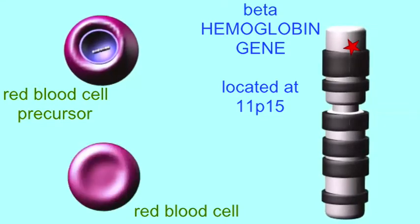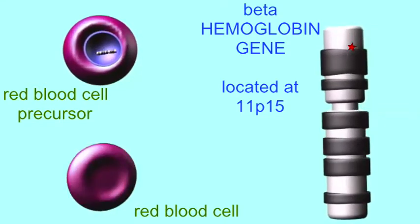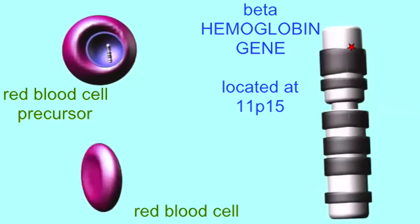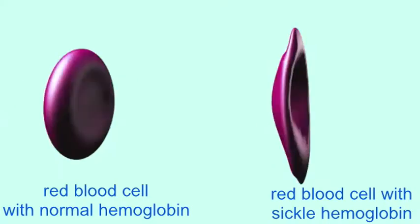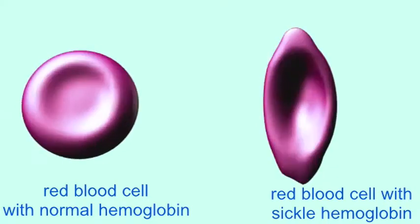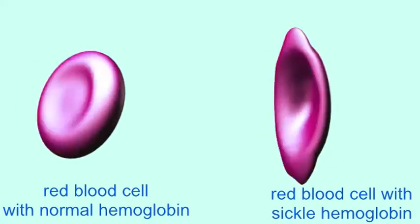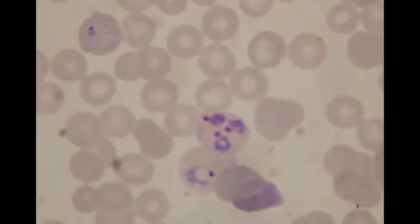Malaria is one of the primary causes of human mortality. Those who are heterozygous for the sickle cell allele, and thus have the sickle cell trait, have some resistance to malarial infection.